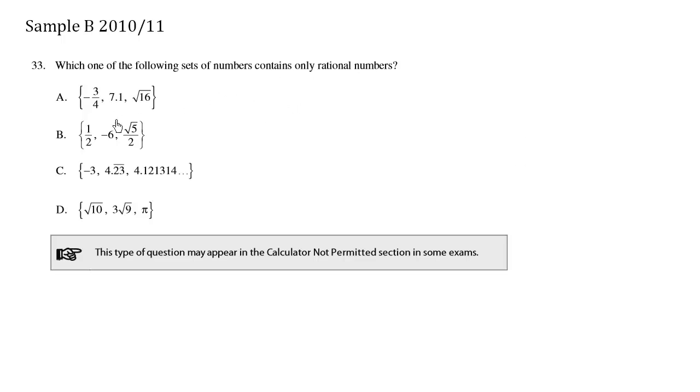Okay, so let's take a look at these values here. We have negative 3/4, this is definitely rational. 7.1, rational. And we have the square root of 16, which we simplify to 4. So this is a set that contains only rational numbers.